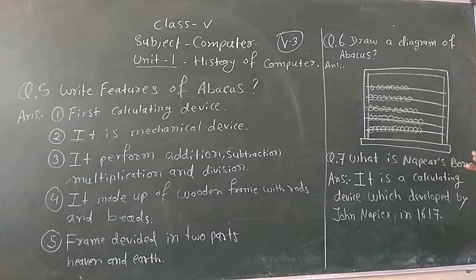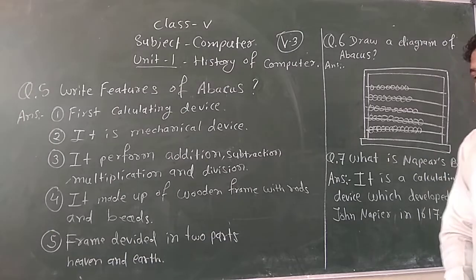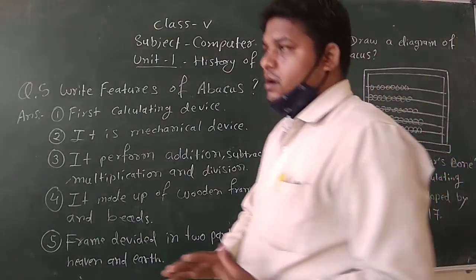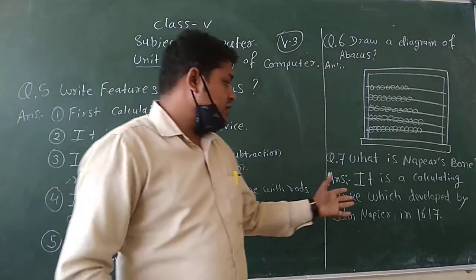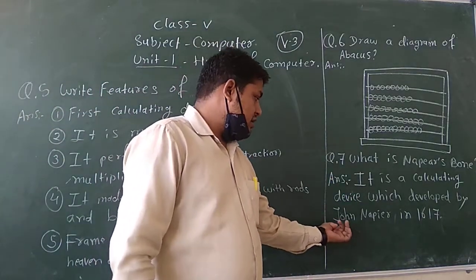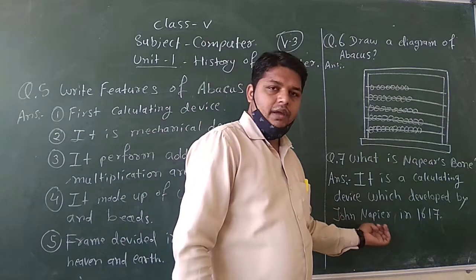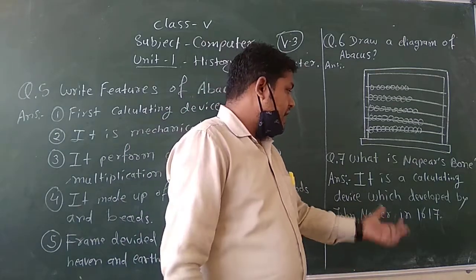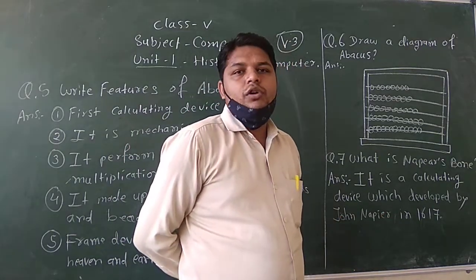What is the Napier bone? It is a calculating device developed by John Napier in 1670. It was developed in 1670 by a scientist, his name was John Napier, and it is also calculating device.